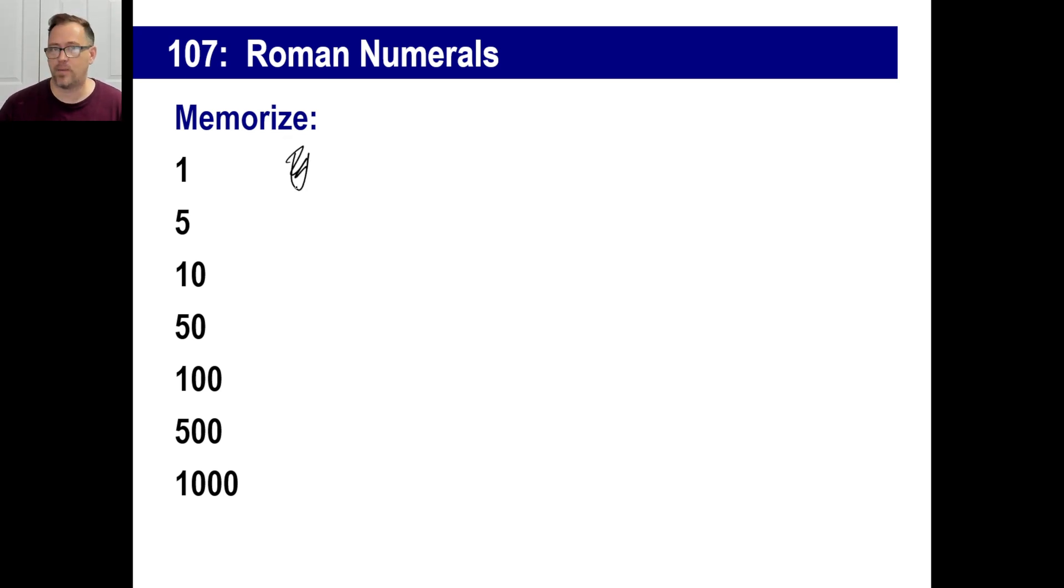One is I. It actually looks like an I. Five is V, ten is X, fifty is L, one hundred is C, five hundred is D, and then one thousand is M.